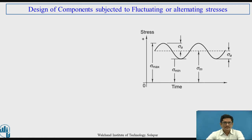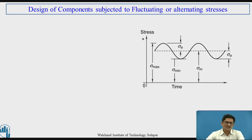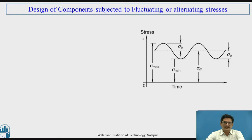Let us see this stress cycle. On the x-axis it is the time scale and on the y-axis it is the magnitude of the stress. The stress is shown on the positive end only. There exists sigma max, which is the maximum stress; sigma mean (MEAN), which is the mean stress; sigma min, which is the minimum stress; and sigma A, which is the amplitude stress.